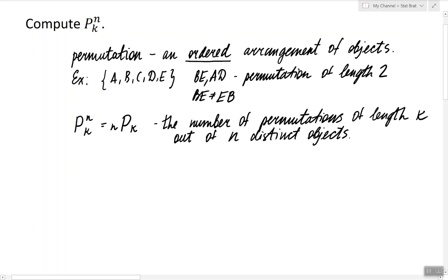And the formula is well known: it's n factorial divided by n minus k factorial.